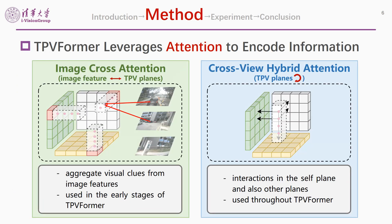We use two types of attention in the proposed TPVFormer. For image cross-attention, we first map a TPV query to a pillar region and sample 3D points in it uniformly. We then project sampled points to the image feature maps and apply deformable attention between TPV queries and image features. The other one, cross-view hybrid attention, enables interactions among TPV queries in the same plane and other planes, also through deformable attention.